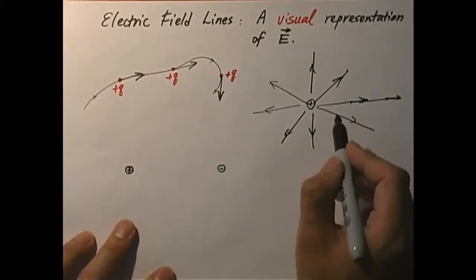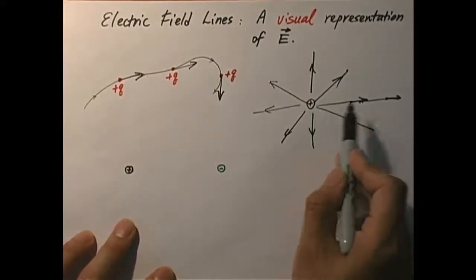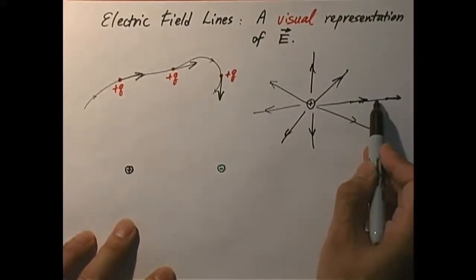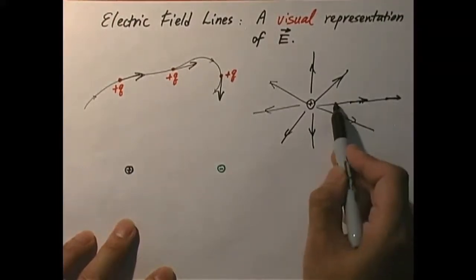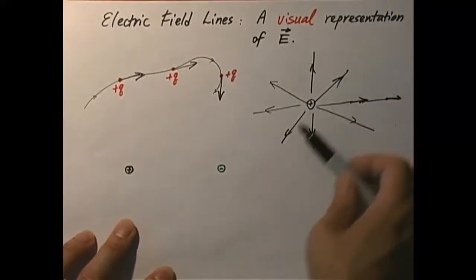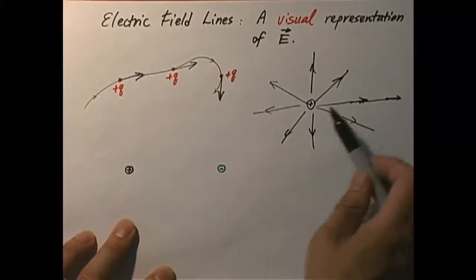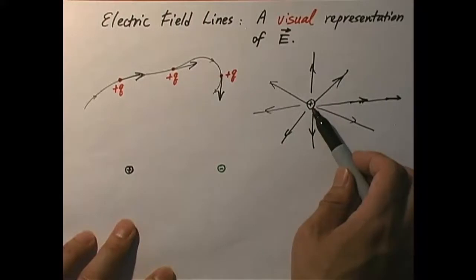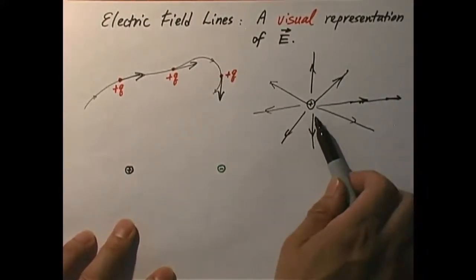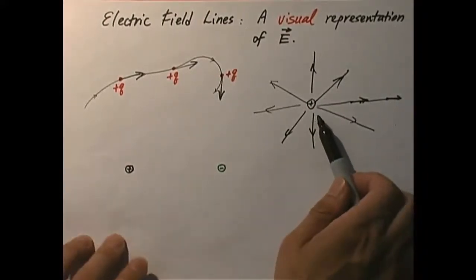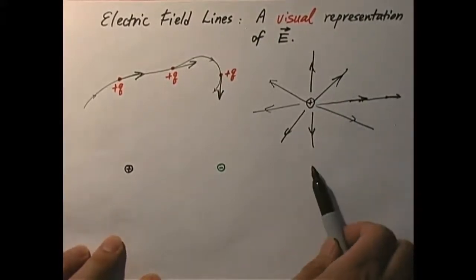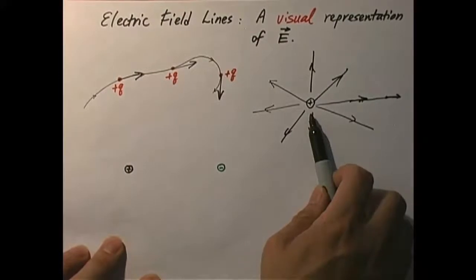What if you have a negative charge? You put a positive test charge there — the only difference is that the field now reverses direction. So for a negative charge, the field lines are also straight lines converging at the location of the charge, except they all point inward, not outward. We can think of a positive charge as the source of electric field lines and the negative charge as the sink.